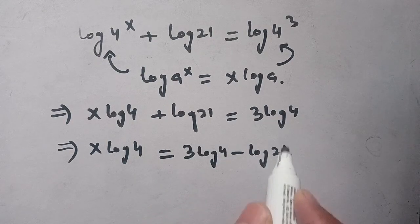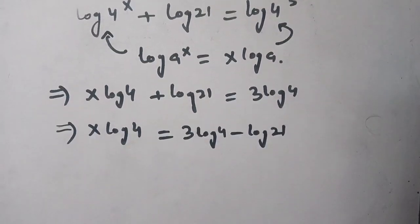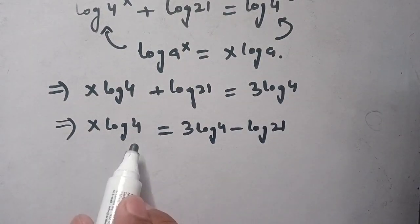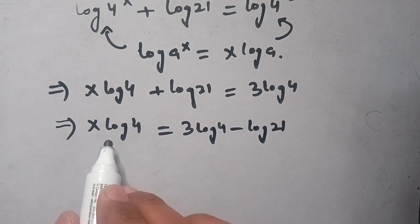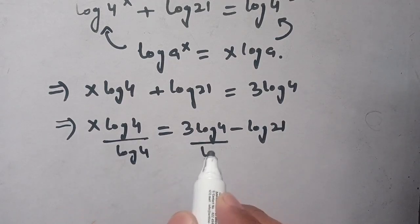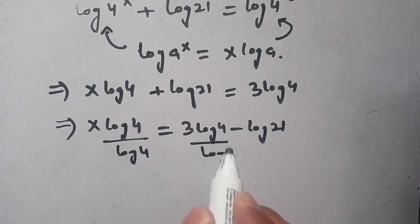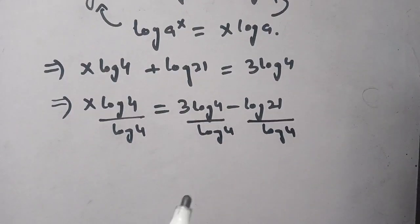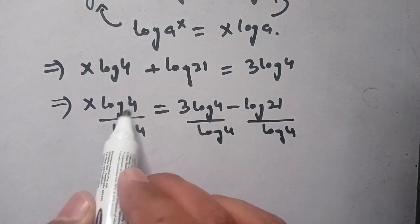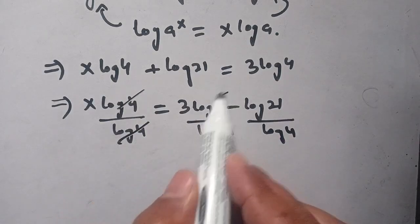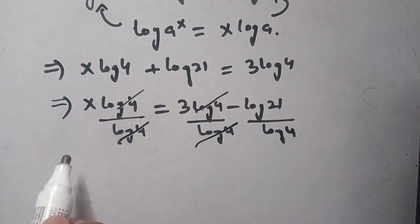In the next step, dividing both sides by log(4), we can cancel log(4) on the left side, giving us x equals 3 minus log(21) divided by log(4).